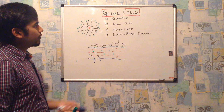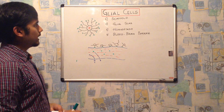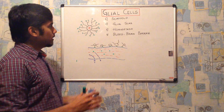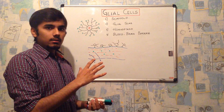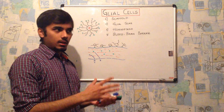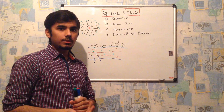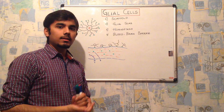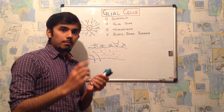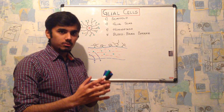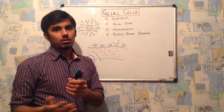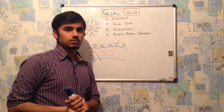So these are the four functions of astrocytes: scaffold, glial scar, homeostasis, and blood-brain barrier. The next video will be regarding how the myelin sheath is formed by Schwann cells as well as oligodendrocytes. Thank you.